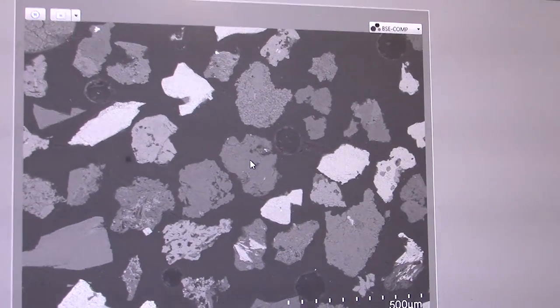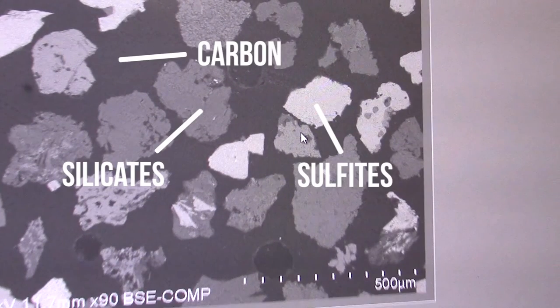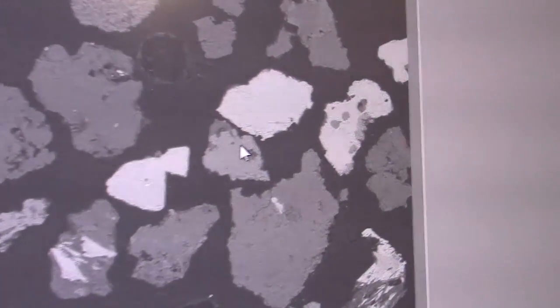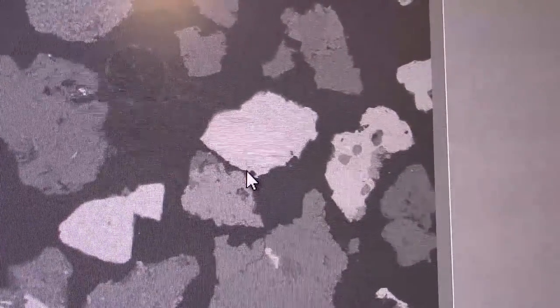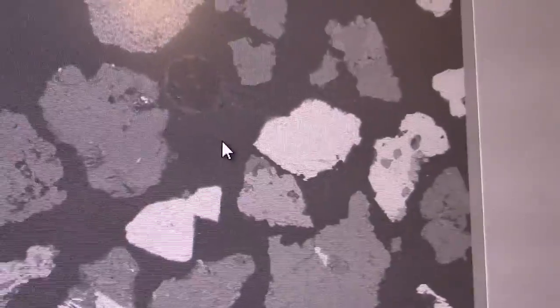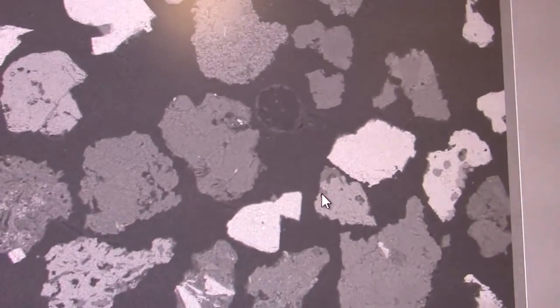The gray ones tend to be silicates and these bright ones tend to be sulfides. The way it's set up is you get farther down the periodic table, you get brighter and brighter. Backscatter is based on gray scale, so black is zero and white is 255. There are all these different layers in between with numbers. The brighter you get, the farther you go down the periodic table.